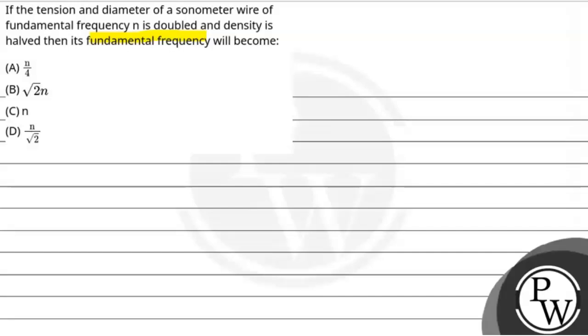So, the key concept of this question is fundamental frequency of sonometer wire. If we look at sonometer wire then how do we calculate? Our general formula is n equals 1 over 2L under the root of T divided by m. This is our general formula for the frequency of sonometer wire.